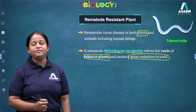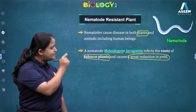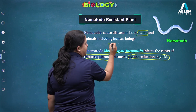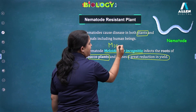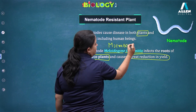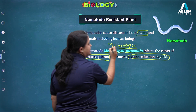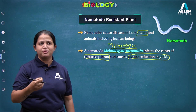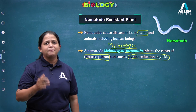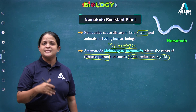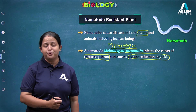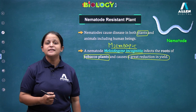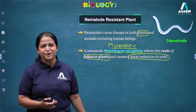One important point to stress here is that this particular nematode is microscopic — we cannot see it through our naked eye. It is a microscopic organism, so it is very difficult to remove. If it were macroscopic, by spraying certain insecticides or pesticides we could get rid of it. But since it is microscopic, then what is the solution for this problem?